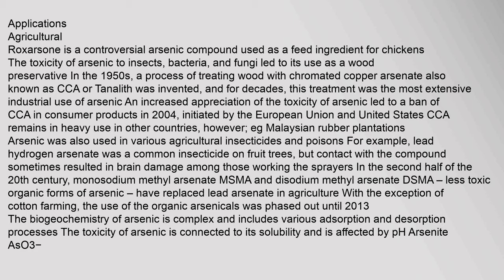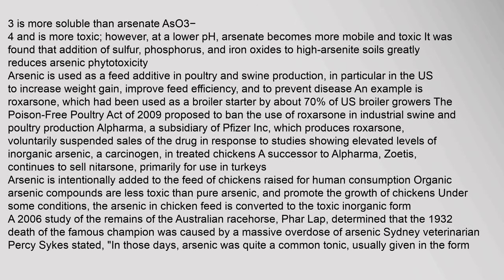The biogeochemistry of arsenic is complex and includes various adsorption and desorption processes. The toxicity of arsenic is connected to its solubility and is affected by pH. Arsenate (AsO3³⁻) is more soluble than arsenate (AsO4³⁻) and is more toxic; however, at lower pH, arsenate becomes more mobile and toxic. It was found that addition of sulfur, phosphorus, and iron oxides to high-arsenate soils greatly reduces arsenic phytotoxicity.